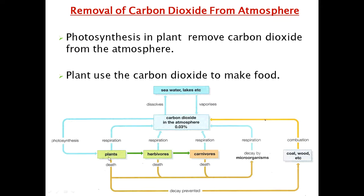While plants are making food through photosynthesis, they are also giving up some carbon dioxide back to the atmosphere through respiration. So this is a cycle already — carbon dioxide is circulating between the living and non-living world. If asked for one way carbon dioxide is returned to the atmosphere, you can say respiration by plants.